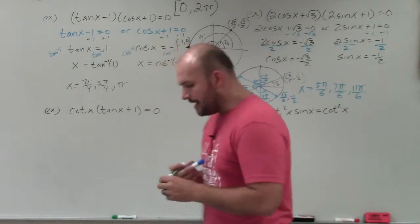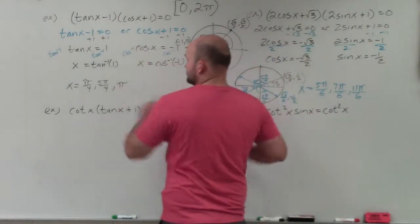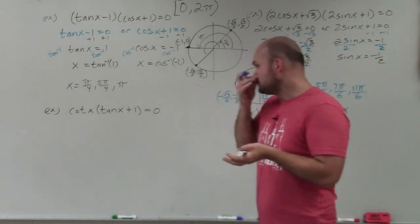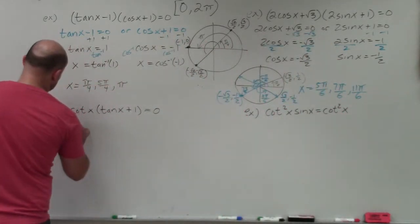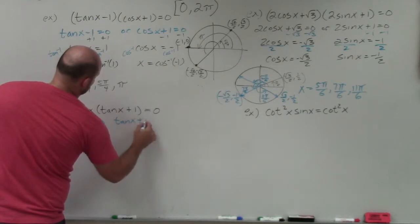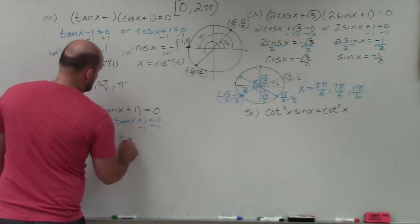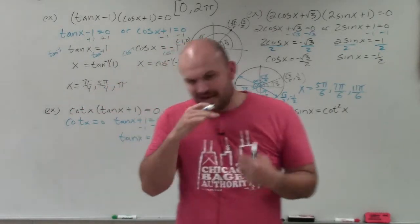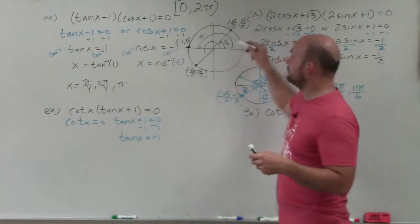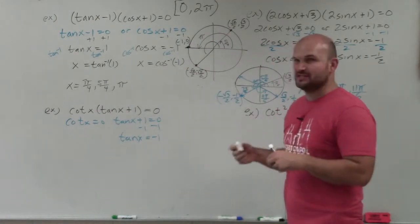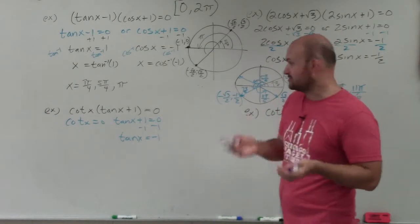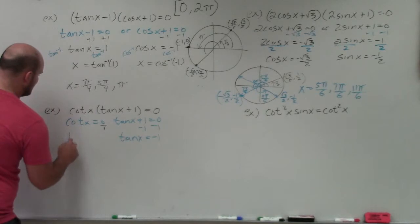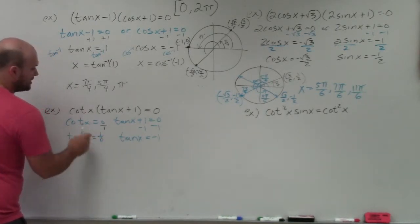In this example, we don't have two binomial expressions — we have cotangent(x) = 0 and tangent(x) + 1 = 0. Apply the zero product property: cotangent(x) = 0 and tangent(x) + 1 = 0, giving tangent(x) = −1. For the cotangent, I think it's much easier to rewrite reciprocal functions as their reciprocal. The reciprocal of cotangent is tangent. So cotangent(x) = 0 means 1/tangent(x) = 0, which means tangent(x) = 1/0, which is undefined.